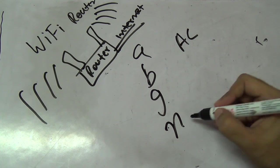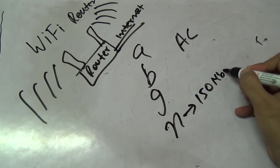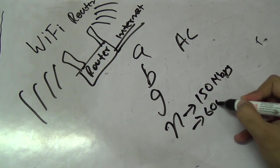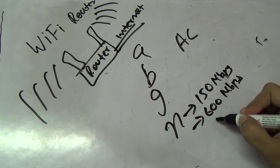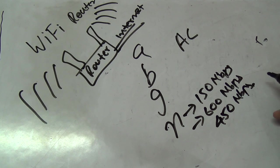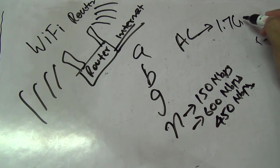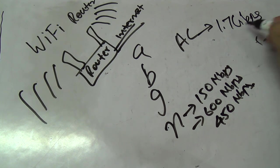We are seeing some devices with ac standard. With n it's 150 megabits per second, but we've seen some devices that go to a max of about 600 Mbps. Mostly the max I've seen is 450 megabits per second. With ac, we're seeing some devices that can go up to 1.7 gigabits per second.